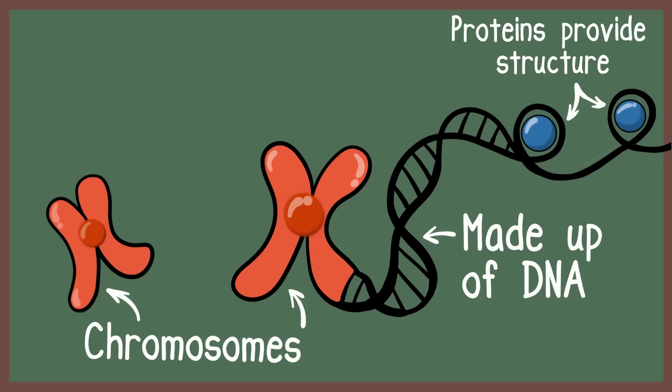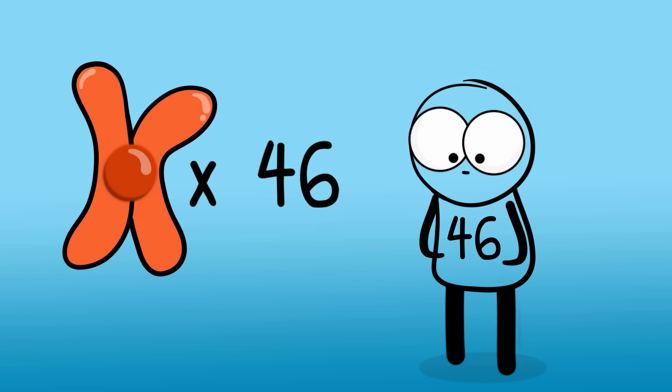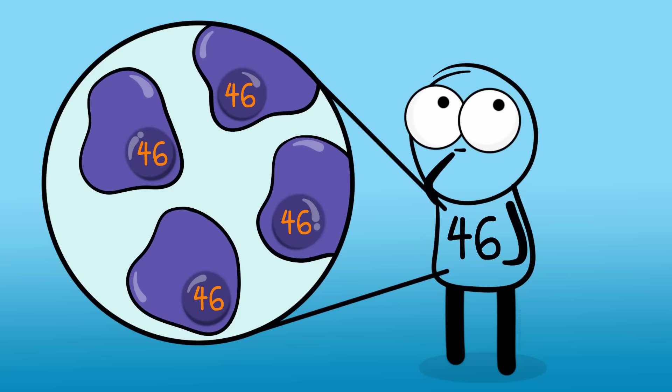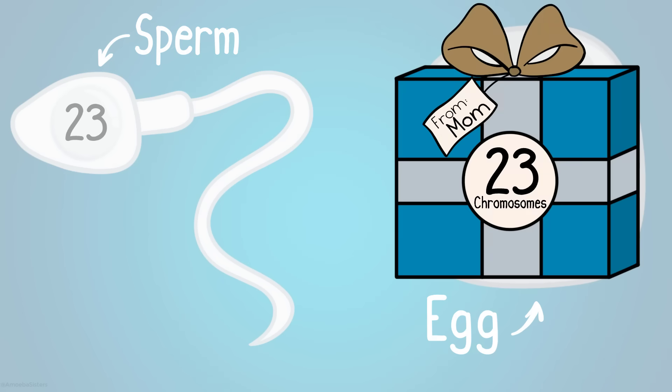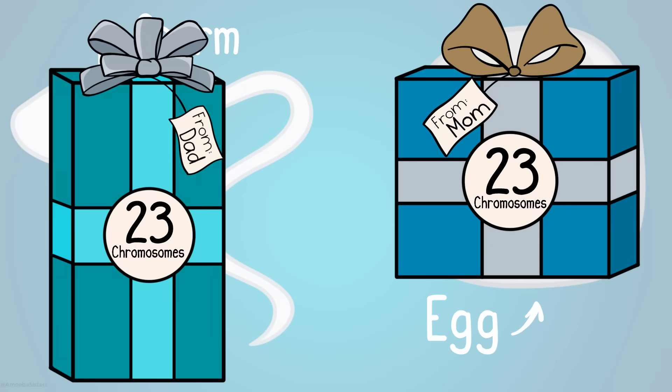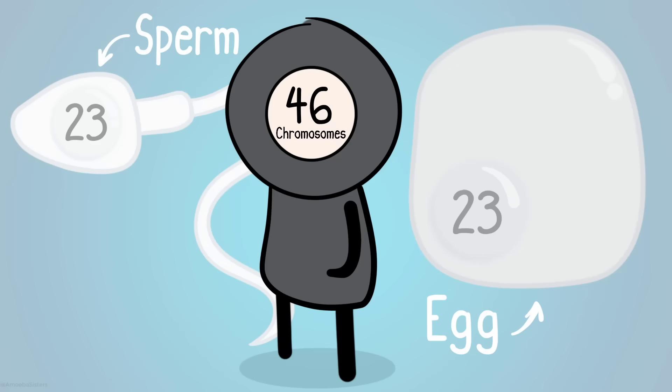Humans have 46 chromosomes. That means nearly every body cell in your body has 46 chromosomes. Human sperm and egg cells, on the other hand, each contain 23 chromosomes. So you receive 23 chromosomes from your mother and 23 chromosomes from your father to give you your 46 chromosomes. Your genetic code.